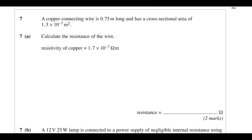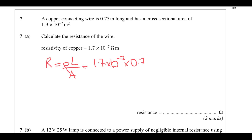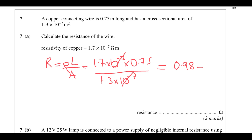We've got a wire 0.75 metres long with a given cross-sectional area — calculate its resistance using the known resistivity. Using R = ρL/A: 1.7 times 10 to the minus 7 times 0.75 divided by 1.3 times 10 to the minus 7 — the powers of 10 cancel — giving 0.98 ohms.